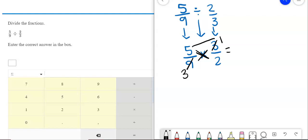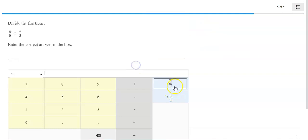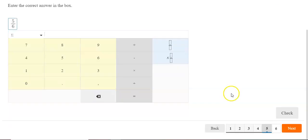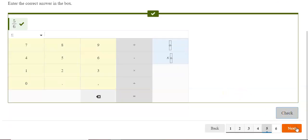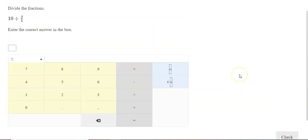Five times one is five. Three times two is six. So, we get an answer of five-sixths.